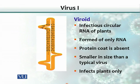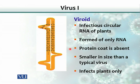There is another term: viroid. It is basically infectious circular RNA of plants. It has only one kind of nucleic acid, which is RNA only. Viruses could have DNA or could have RNA as their nucleic acids, but not both. But viroids always have RNA in them. There is no protein coat, and they are much smaller in size than a typical virus. They only infect plants.